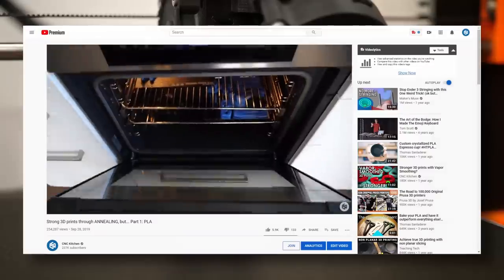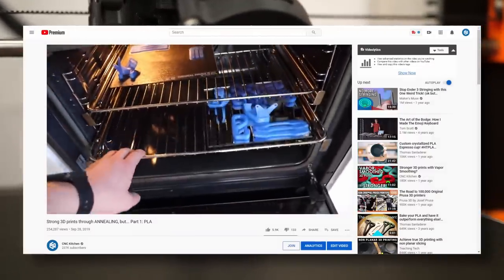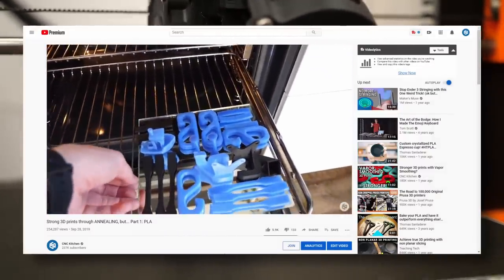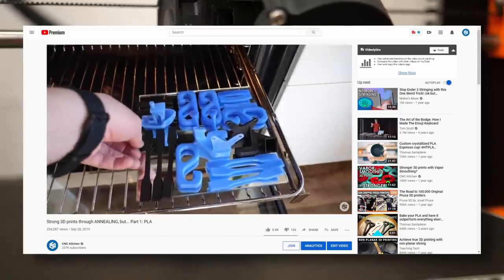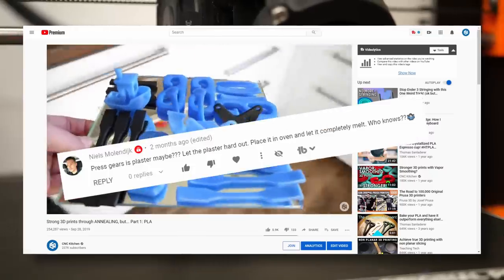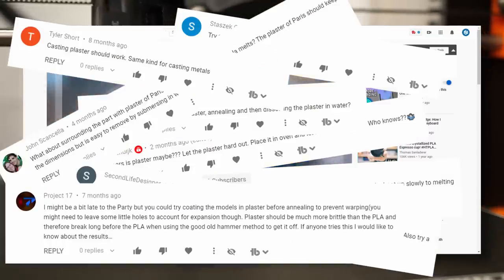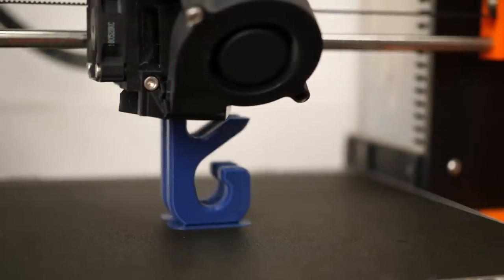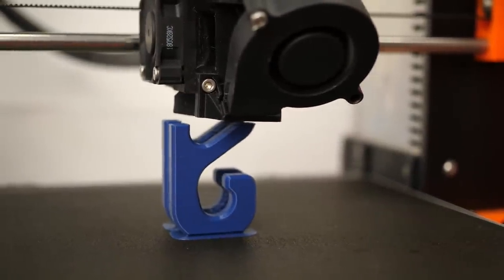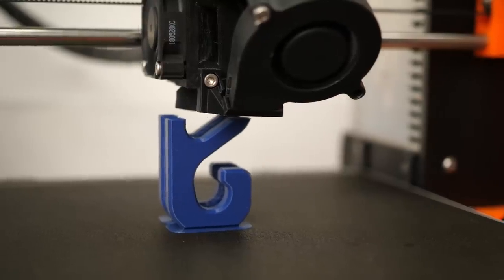In the comments under one particular video, viewers wanted me to anneal my parts in plaster to minimize warping and even using the closed cast as a mold in which I can remelt the printed part and fuse the layers together. So this is what I've finally been working on. If you have performed tests with those or similar techniques, please let us know down in the comments!